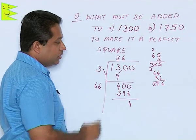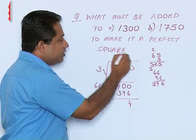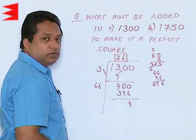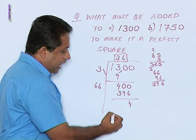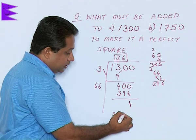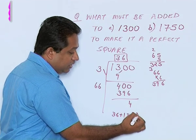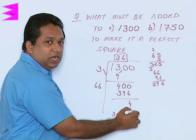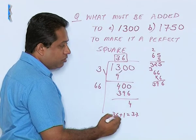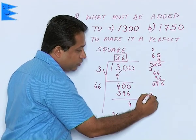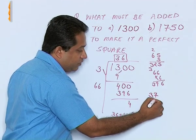For that we will have to see this number at the quotient, which is 36. Add 1 to that, so 36 plus 1 we will get 37. And whatever number is obtained after adding 1 to the quotient, we are going to square that number. So which means that 37 will be multiplied with 37.